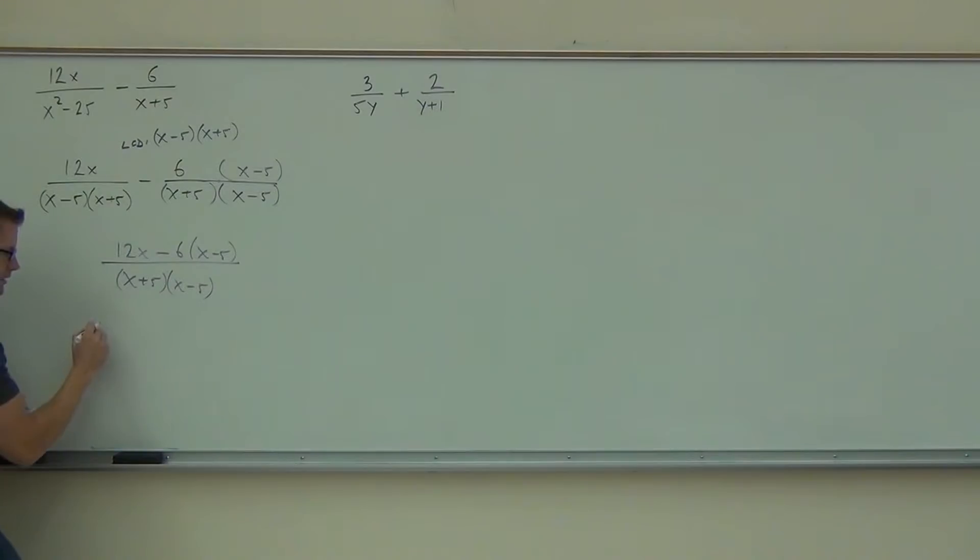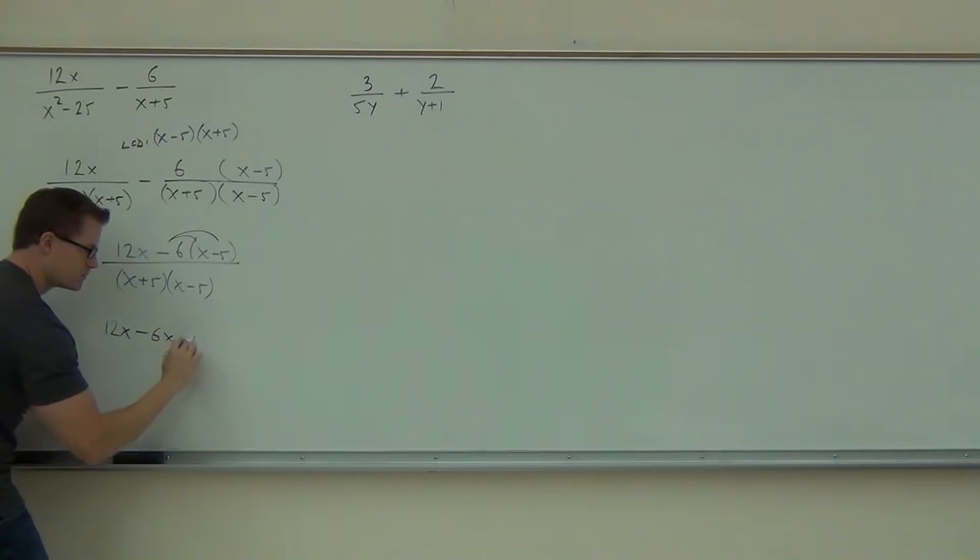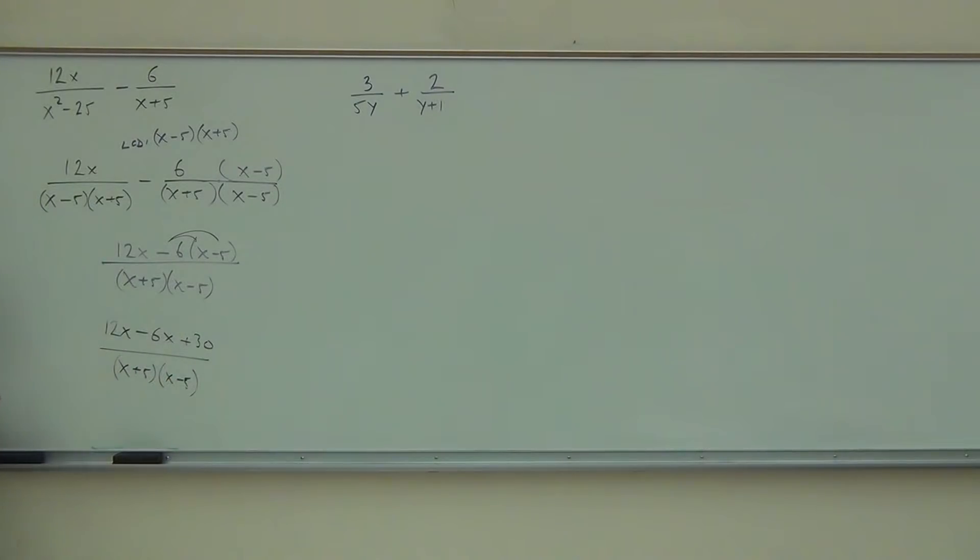So we'll keep going on this. We'll have 12X minus 6X and then plus 30 over X plus 5 times X minus 5. Did you make it that far? Okay. What now? Combine. Great. So we can do that. We've got a couple of them.